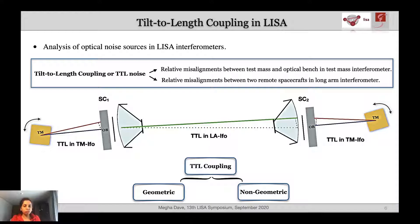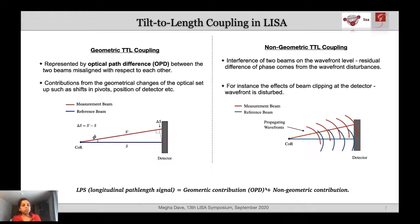Tilt-to-length coupling is the coupling of the additional path length in the interferometry readout due to related misalignments of the instruments. This is broadly categorized into two parts: geometric TTL coupling and non-geometric TTL coupling. The geometric TTL coupling is associated with geometrical changes in the optical setup. Here we see two beams approaching the detectors — one beam is rotated with respect to the other, and this rotated beam has to travel through a longer path, creating an optical path difference. If this beam has continuous tilts, it will also walk on the detector. This is geometric TTL coupling.